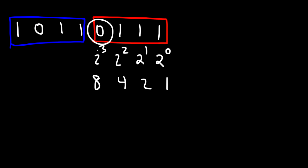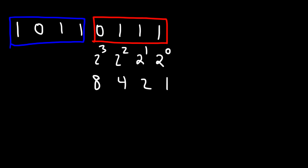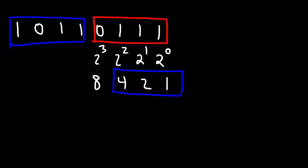So we have 0 times 8, that's 0, and then we have 1 times 4, then 1 times 2, and 1 times 1. We just need to add up these numbers because they carry a 1 with them. So the binary number 0111 correlates to 7, because 4 plus 2 plus 1 is 7.